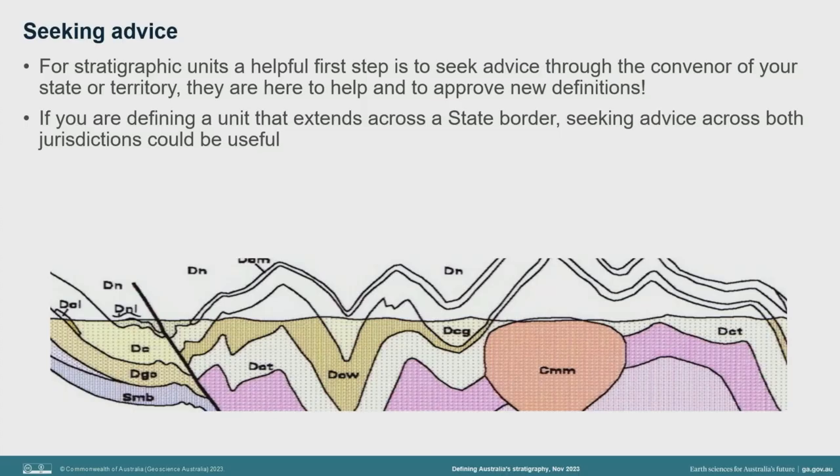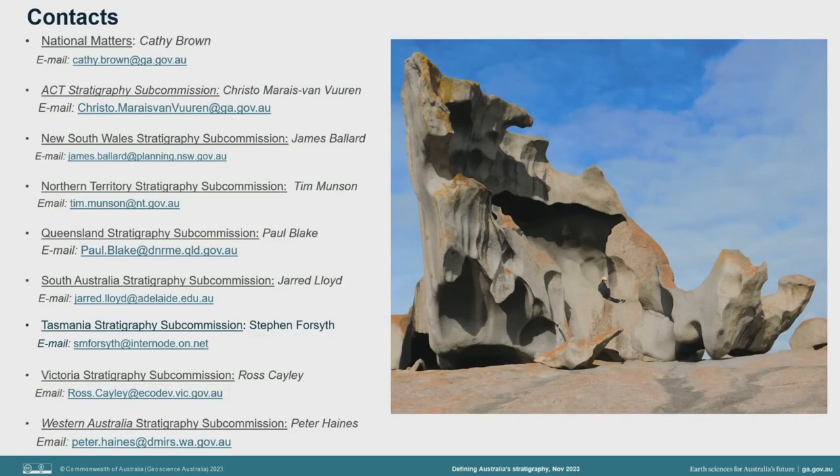If you are unsure about anything regarding reserving a name, setting up a type section, or defining a unit, the members of the Stratigraphy Commission are all here to help. It is recommended to get in touch with them at any stage of the process should you have questions. Here is a list of the State and Territory Stratigraphy Commission conveners, which is also available on the Stratigraphy pages of the GA and the GSA websites.